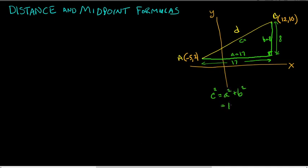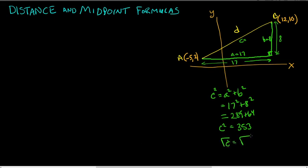It's the Pythagorean theorem: C squared equals A squared plus B squared. Since A is 17 and B is 8, just use your calculator. 17 squared is 289, and 8 squared is 64. When you add those up, you get 353. That's not the distance — that's the square of the distance. To get C, take the square root of 353. Can we simplify that? As it turns out, no — 353 is a prime number. So the square root of 353 exactly is as simple as it gets.